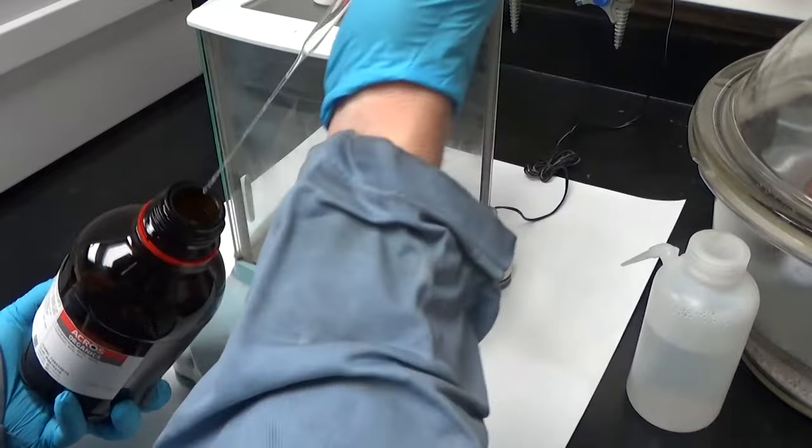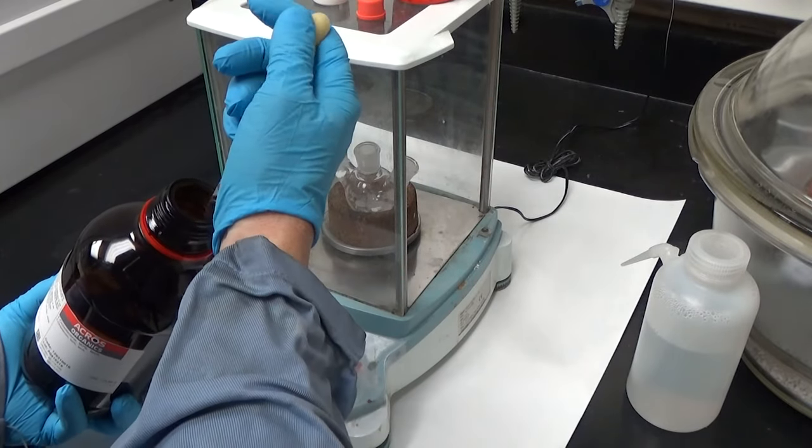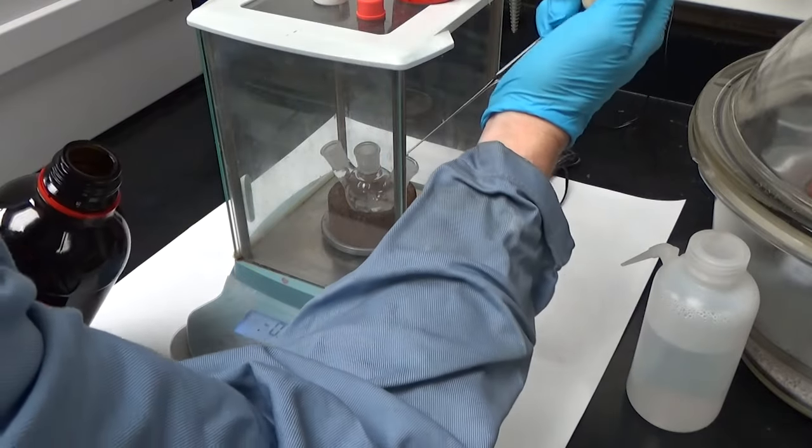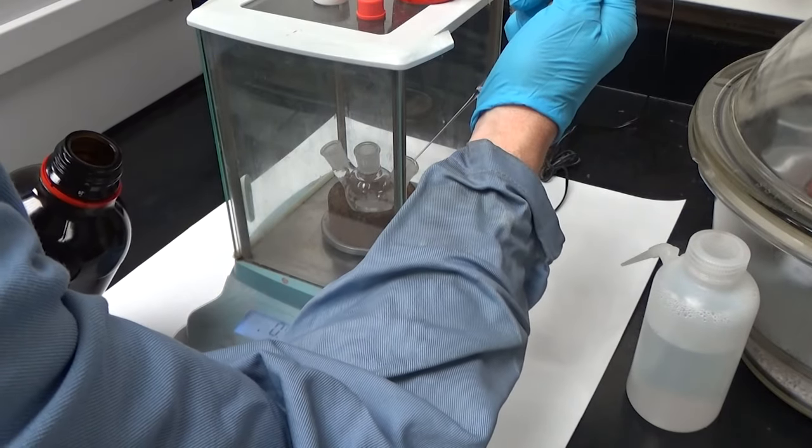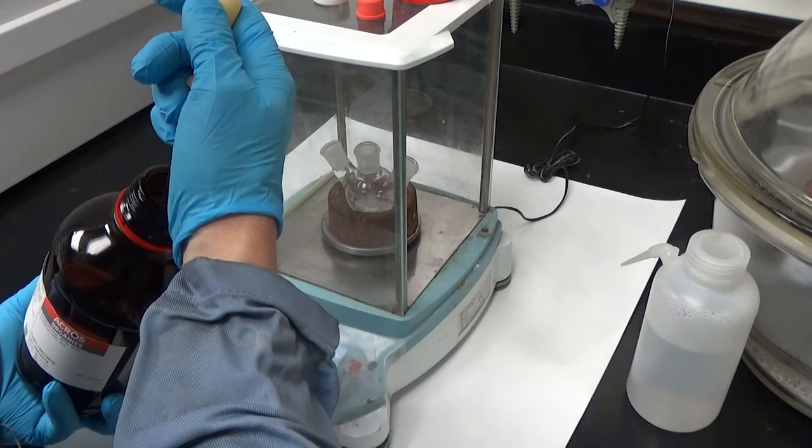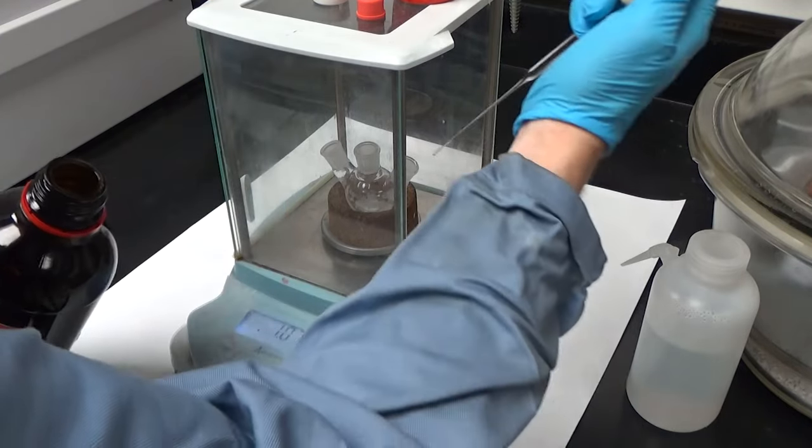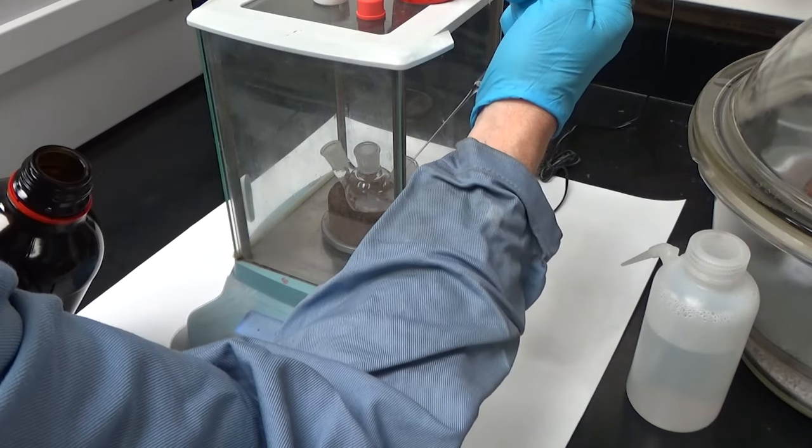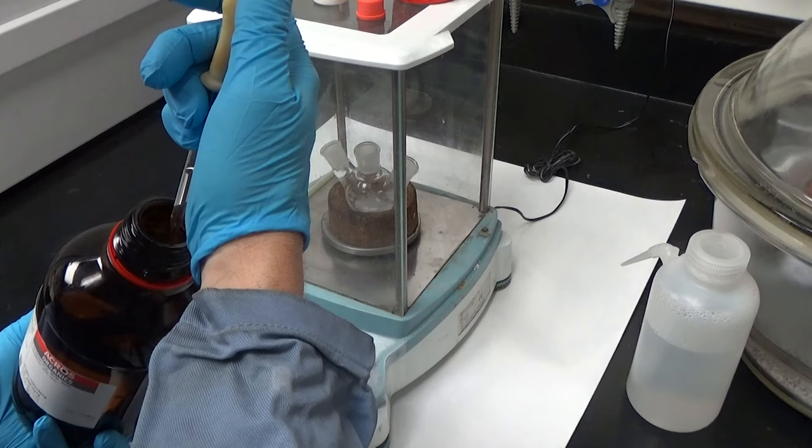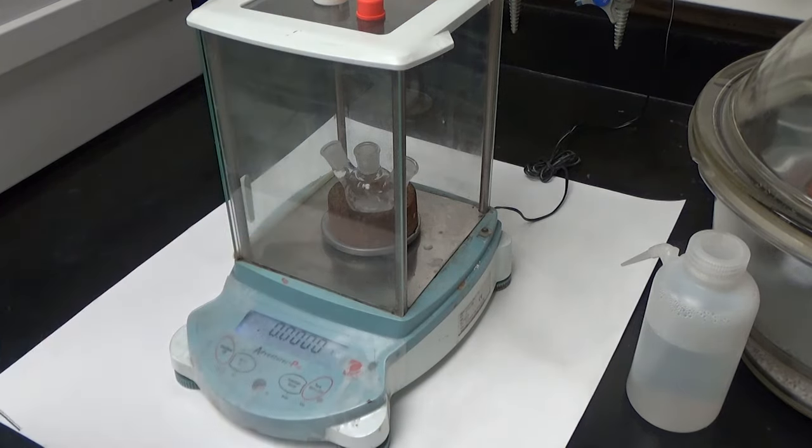So now we're weighing out the solvent and you notice I'm not using a graduated cylinder or syringe and that's because a balance, this is an old balance that can take a little at the higher end of the weight scale. I like to weigh solvents out because it's actually way more accurate as long as you know the density. A balance has many more significant figures than a graduated cylinder.